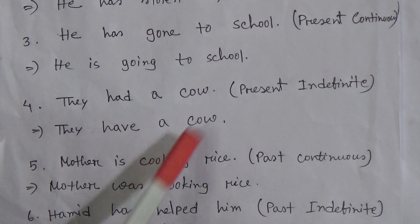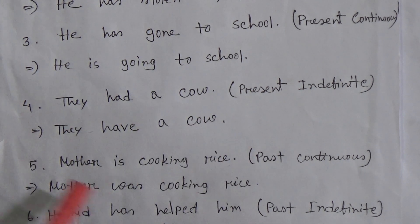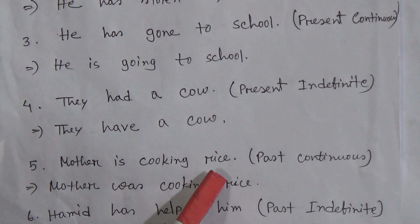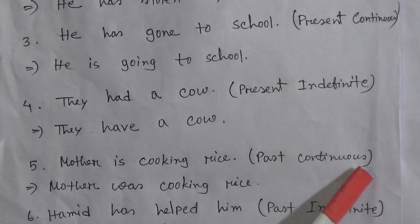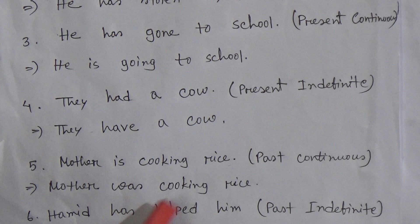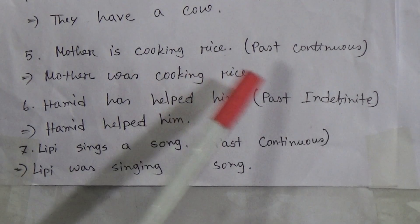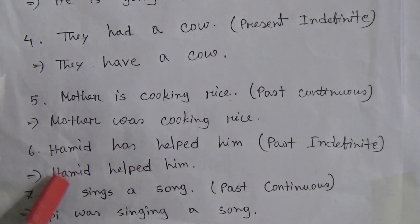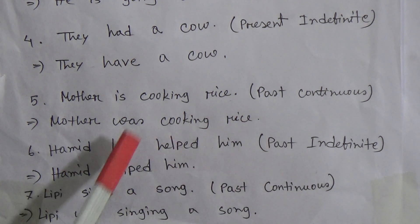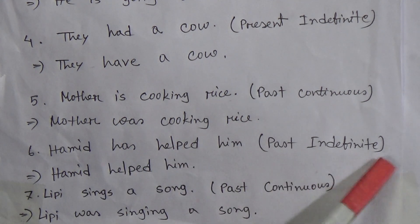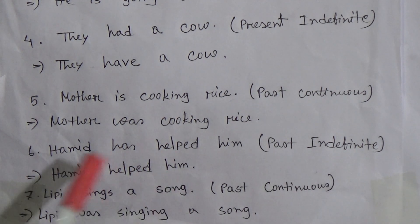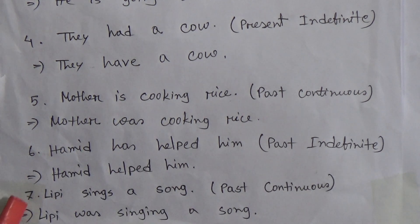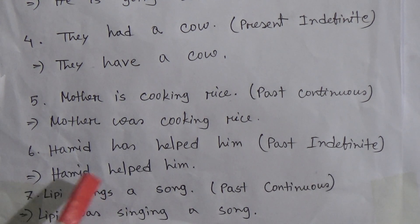Number five: 'Mother is cooking rice.' You have to change this sentence into past continuous tense: 'Mother was cooking rice.' Number six: 'Hamid has helped him.' You have to change this into past indefinite tense, so you write: 'Hamid helped him.'